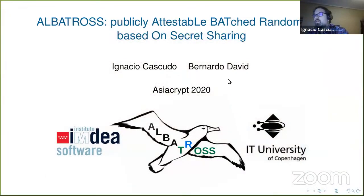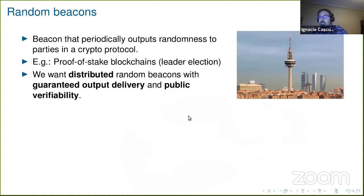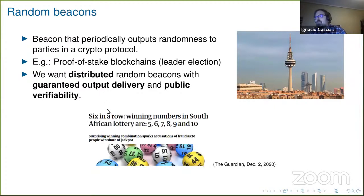Yes, thank you. This is a paper with Bernardo David from IT University Copenhagen, and I'm Ignacio Cascudo from INDEA Software. This is about multi-party computation protocols to create randomness. We are motivated by the notion of a random beacon that periodically outputs randomness to parties in certain cryptographic protocol. For example, this is useful in proof-of-stake blockchains because you need every now and then to run lotteries to select a leader for the next session. And what we want to do is to implement that in a distributed way with guaranteed output delivery and public verifiability, so that we avoid things like happened in South Africa last week where the lottery had a peculiar outcome and people complain. So here we will have public verifiability and any verifier can check that the result is fair.